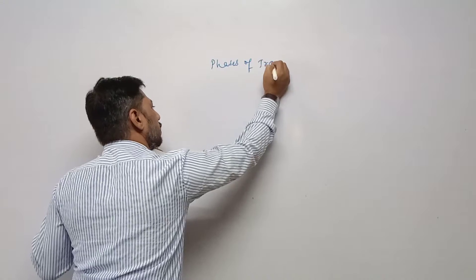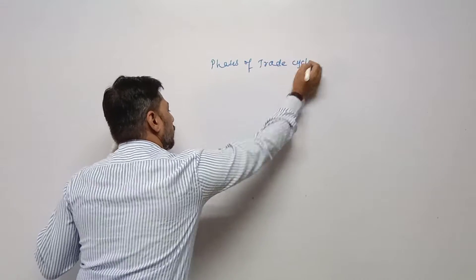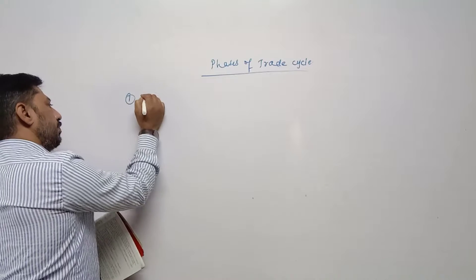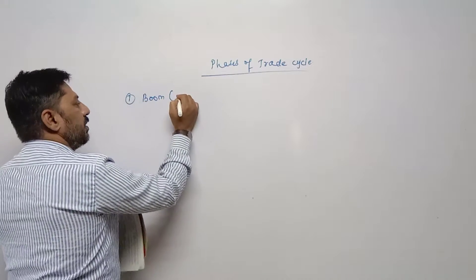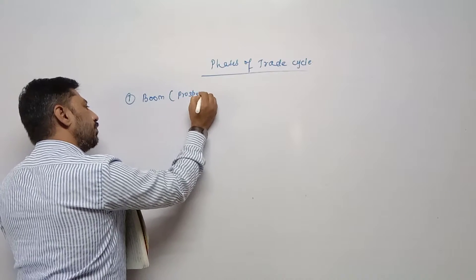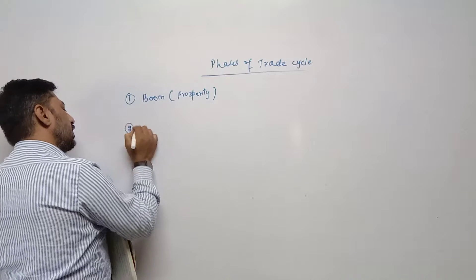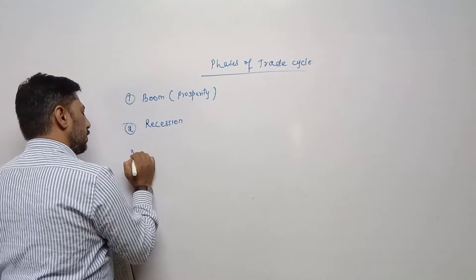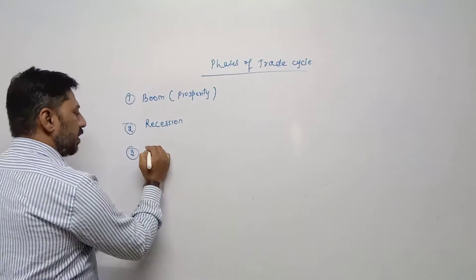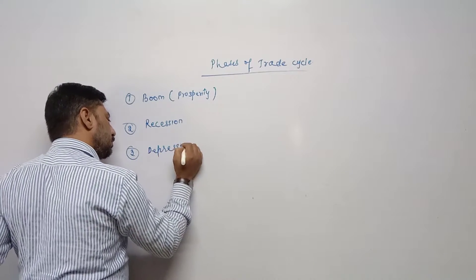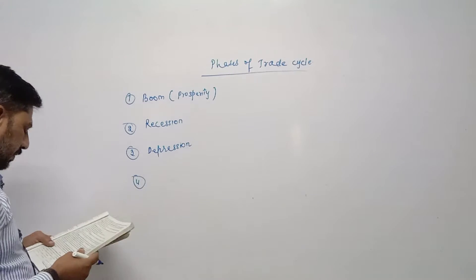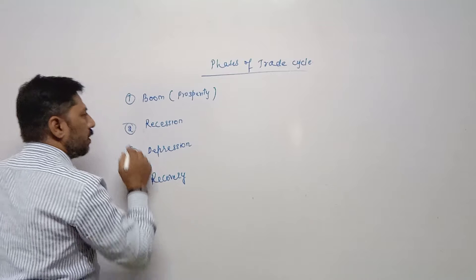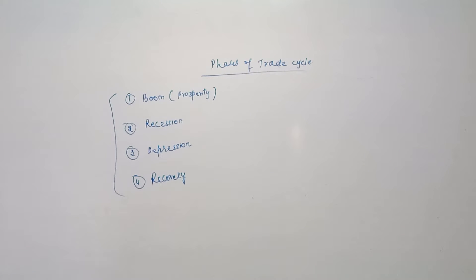Phases of trade cycle: the first one is boom period, also called prosperity period. The second one is recession period. The third one is depression period. And the fourth is recovery period. These are the four phases — four changes of trade cycle.